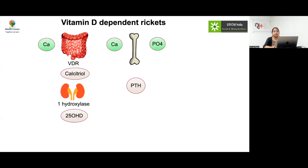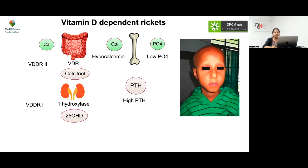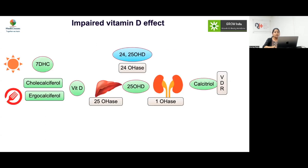In vitamin D-dependent rickets, VDDR1 results from a problem in one-alpha hydroxylase synthesis, while VDDR2 results from resistance to vitamin D action. Both VDDR1 and VDDR2 have hypocalcemia, low phosphate, and high PTH from secondary hyperparathyroidism. These conditions are very difficult to treat and require large amounts of IV calcium. Children with VDDR2 present with alopecia because vitamin D is important for the hair follicle.